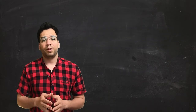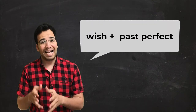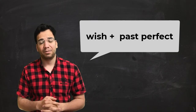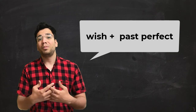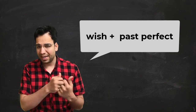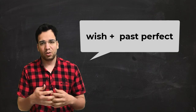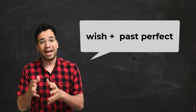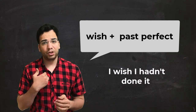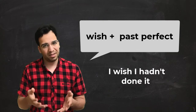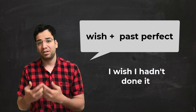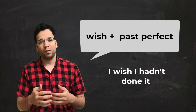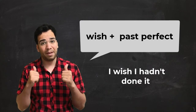The third form with wish is wish plus past perfect. We use this form when we want to be able to change a situation in the past, but we can't. For example: I wish I hadn't done it — but I did. So we use wish and past perfect when we want to be able to change a situation in the past.